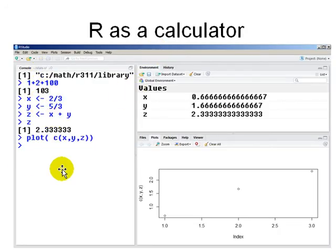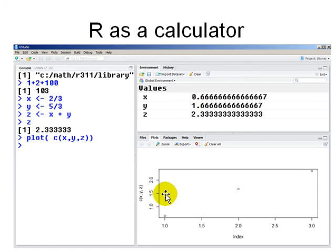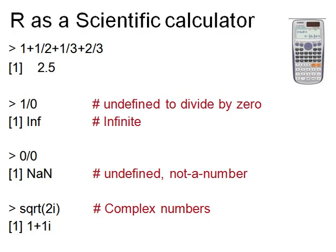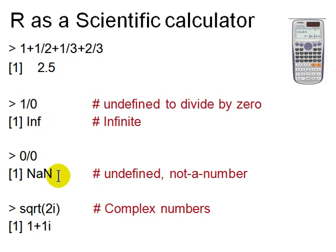You can use R like a calculator — in RStudio you type expressions and the variables and values are listed in the environment panel, and plots appear in the plots panel. R has slightly more than a calculator: it handles undefined numbers and infinite numbers, so 1 divided by 0 is Inf, and 0 divided by 0 is NaN (not a number). It also supports complex numbers — for example, the square root of -2i gives 1+1i — and automatically converts to complex numbers as needed.